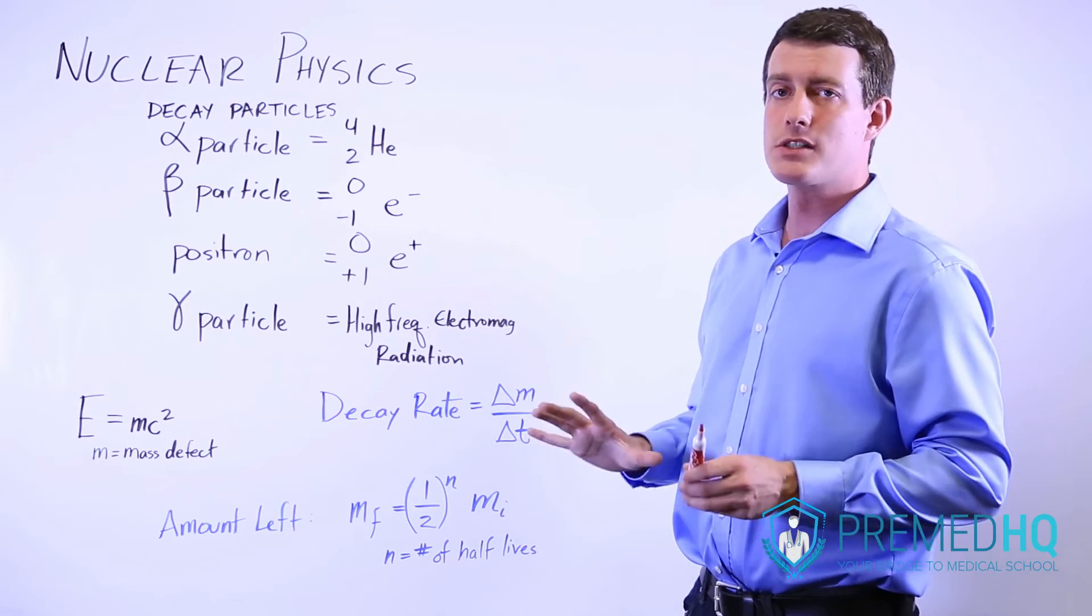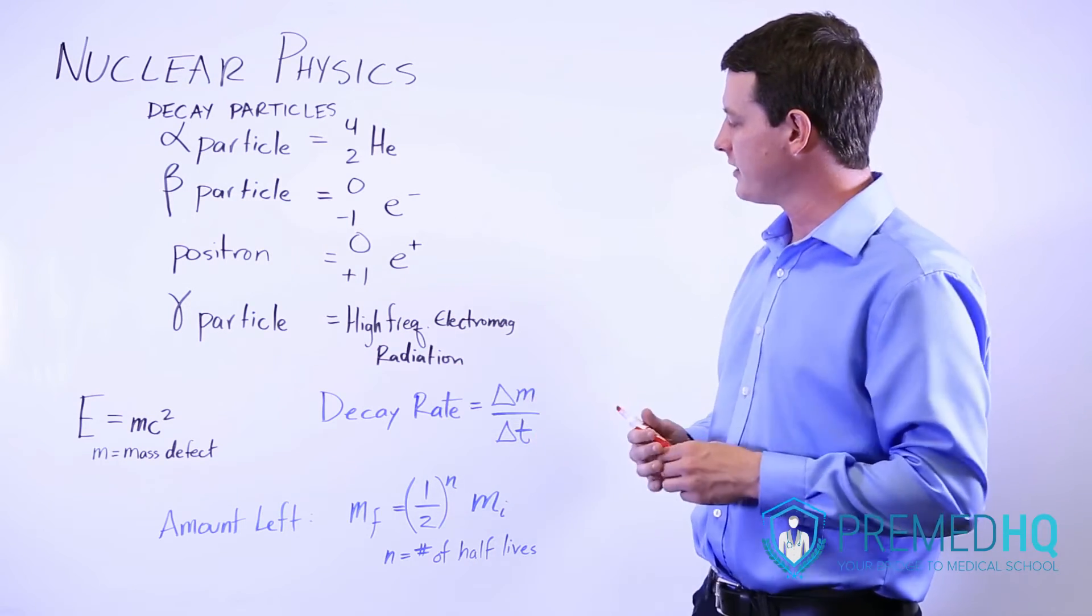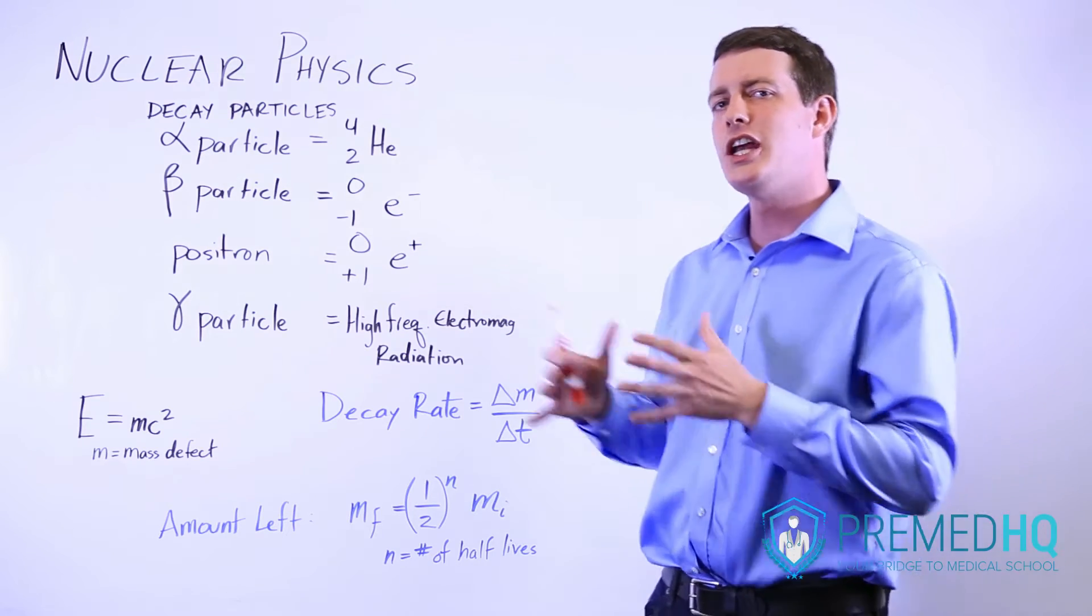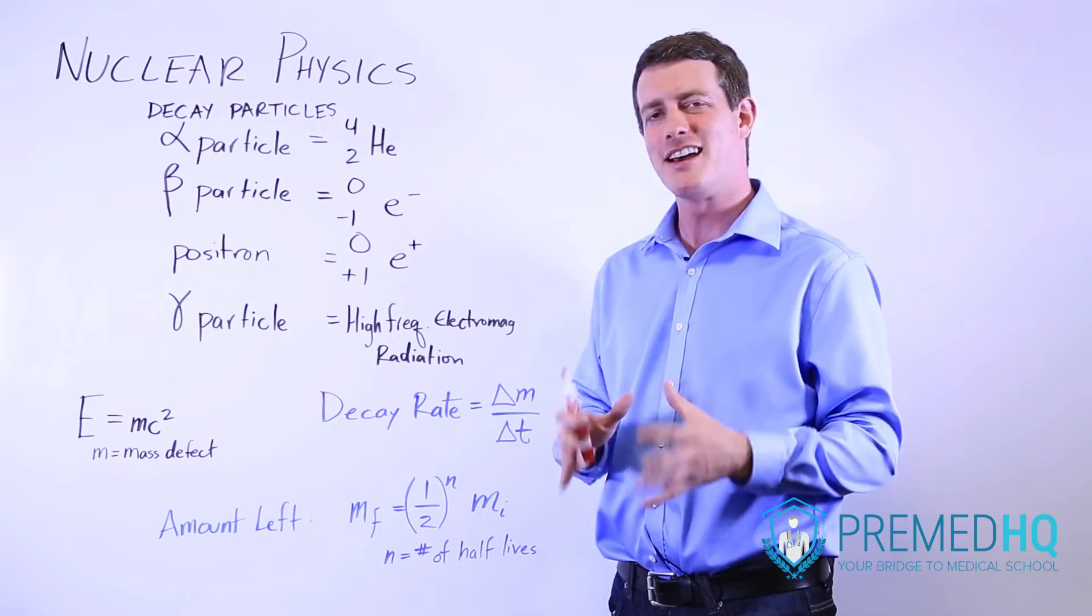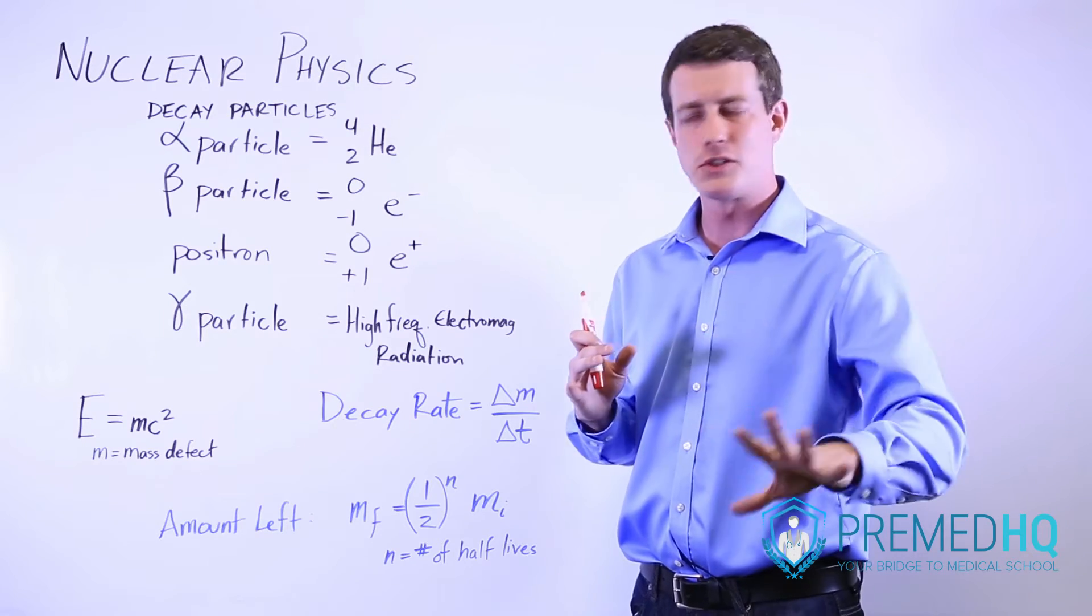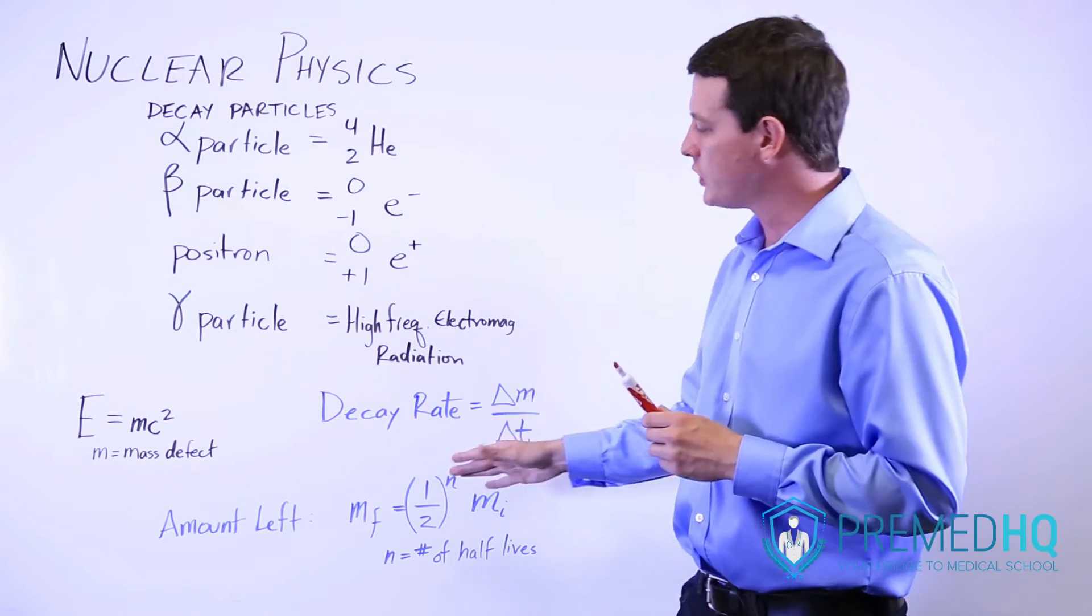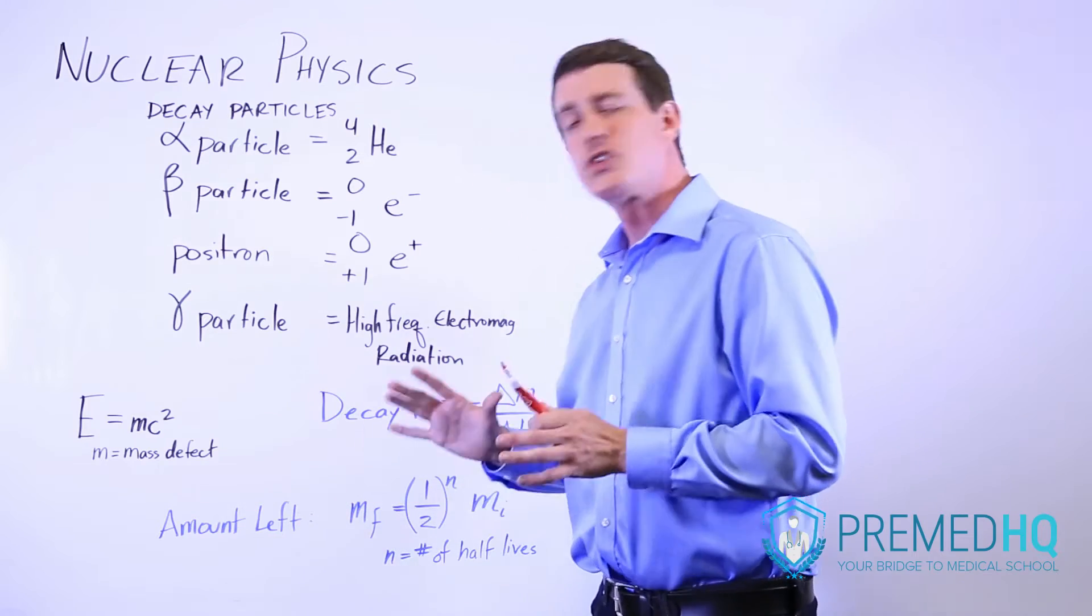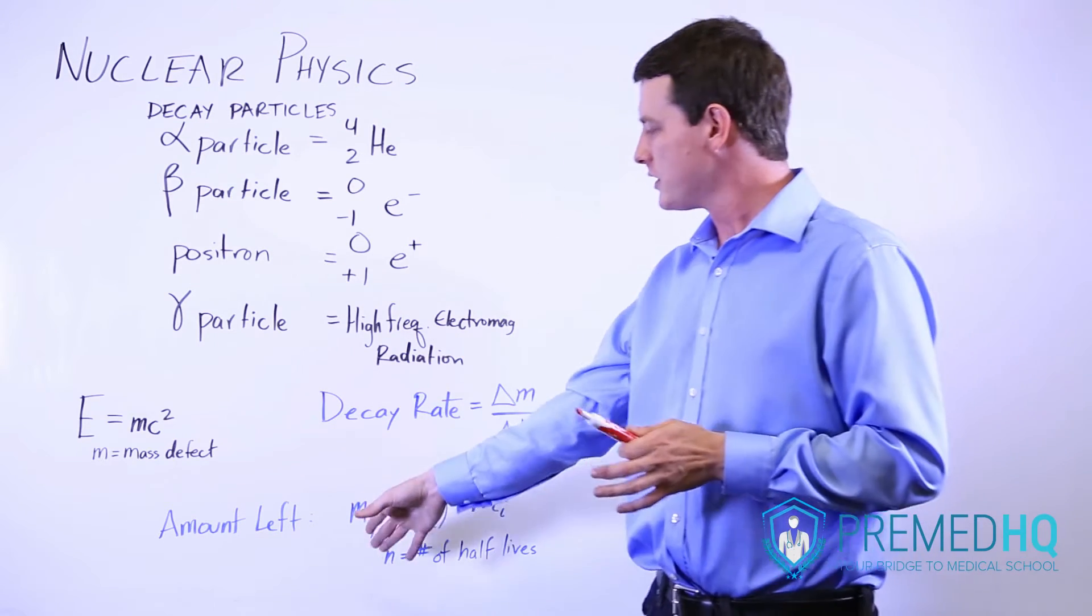Other things that you might be responsible for are calculating the decay rate, which is essentially the change in mass over the change in time. And that is because a core nucleus is releasing particles and degrading. And if you need to, the amount left after a certain period of time can be calculated using this formula.